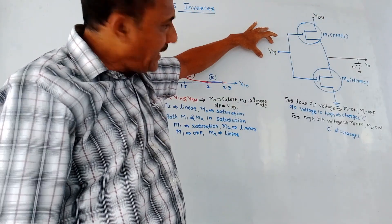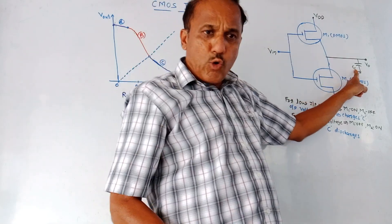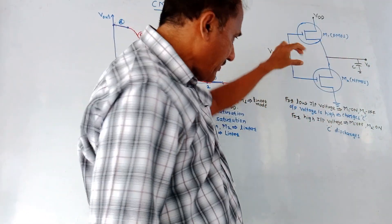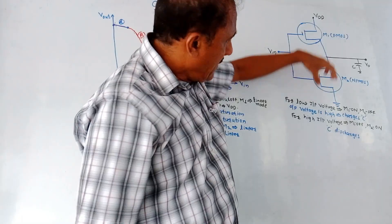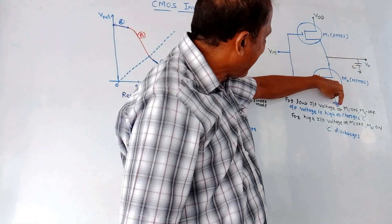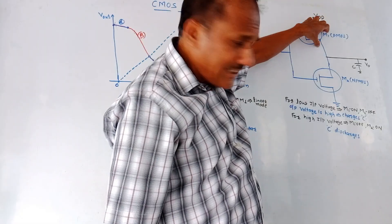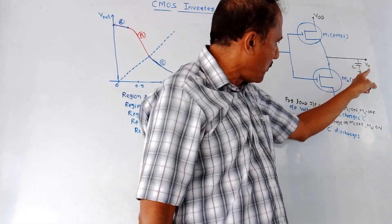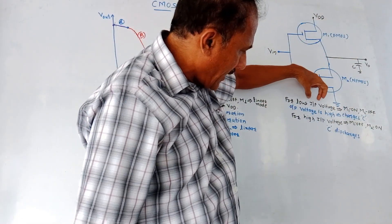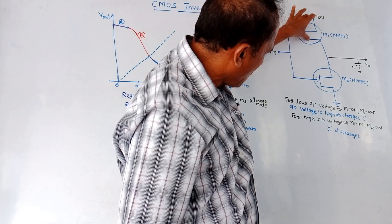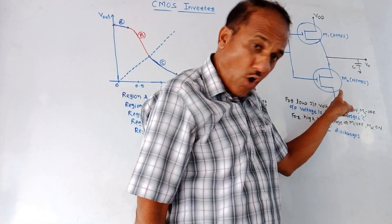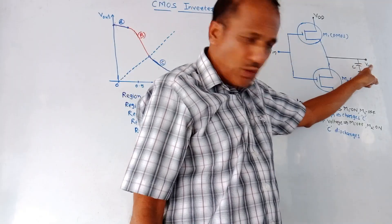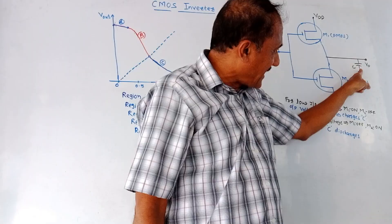From this end, we are applying input voltage Vin. This is VDD, and at the output, this is the output voltage V0. At the output, we are connecting one capacitor. The operation is pretty simple. For low input voltage, when you apply low input voltage, this PMOS will be on. Once this MOSFET is on, the supply voltage gets connected at the output and it will charge the capacitor.